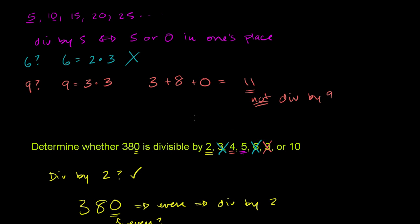So lastly, we have the number 10. And this is in some level the easiest one. What do all the multiples of 10 look like? 10, 20, 30, 40. We could just keep going on and on. They all end with 0. Or if something ends with 0, it is divisible by 10.